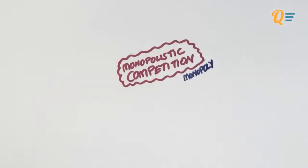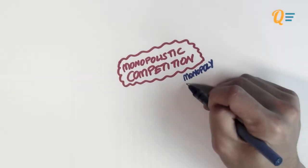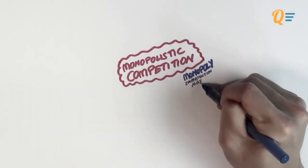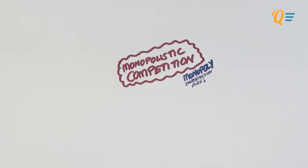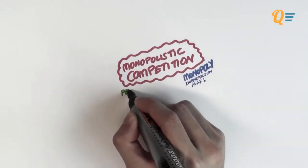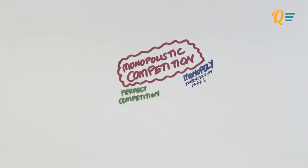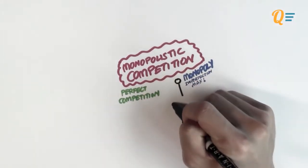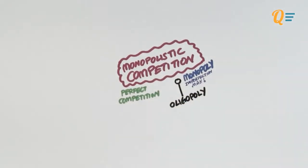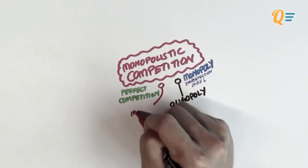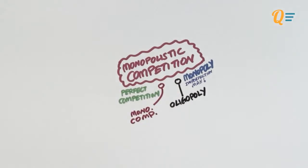Looking at the spectrum of market structures, the monopoly is on the rightmost extreme end, and we know that the monopoly is the most imperfect market of all the market structures. On the other extreme end, you have perfect competition, which is the most efficient and most desirable market for society. In the middle, you have two different types: near the monopoly is the oligopoly, with quite a bit of imperfection, and nearer to perfect competition you have monopolistic competition.